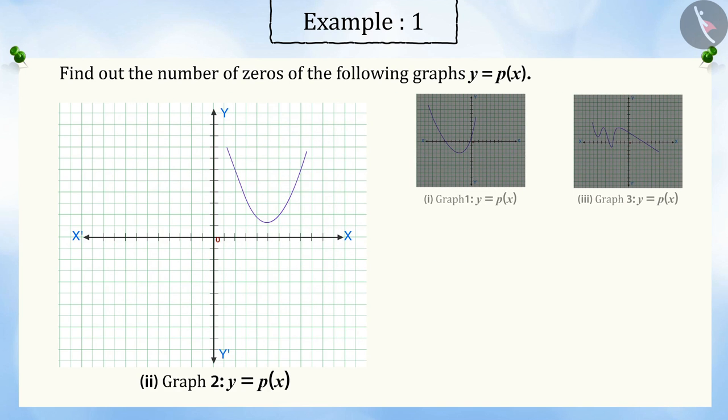In the next graph, you can see that the graph doesn't intersect the x-axis anywhere. Hence, the number of zeros in this case will be zero.